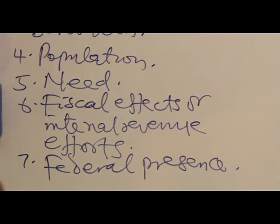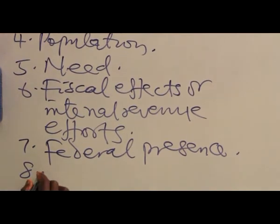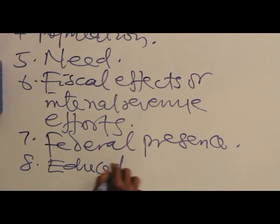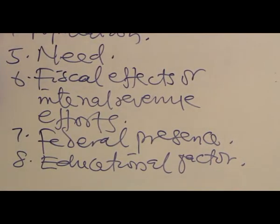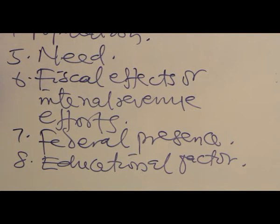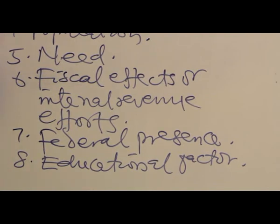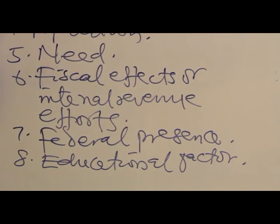Eight, educational factor. This is based mainly on primary enrollment. For example, where we have a significant number of children of school age who are not in school, the federal government actually has an allocation for such a situation in the revenue allocation formula.